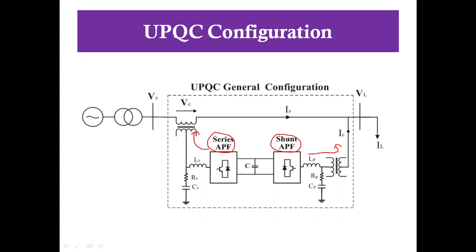The Series Active Power Filter is used to mitigate the voltage disturbance and harmonics in the power system by injecting voltage. The Shunt Active Filter is used to compensate the reactive power in the power system by injecting current. The Shunt Active Filter is also used to regulate the DC link voltage for both filters. This is the main operation of UPQC.